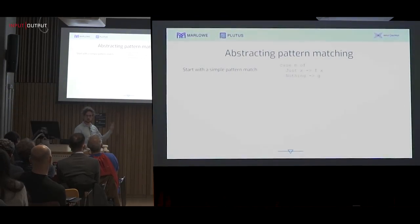If we take seriously the idea that what it is to be a value of a data type is to be able to be pattern matched on, then we end up developing quite a nice encoding for these things. Let's start with just a simple pattern match. We have some value m of type maybe a in Haskell parlance. We're going to pattern match on it. In the case where it's just, we're going to apply some function f to the thing inside it. In the case where it's nothing, we're going to use some value g.